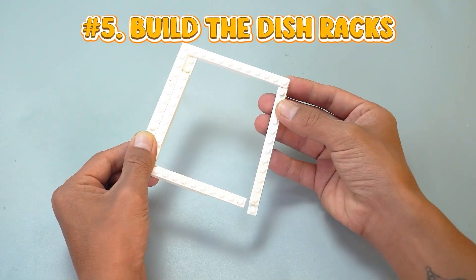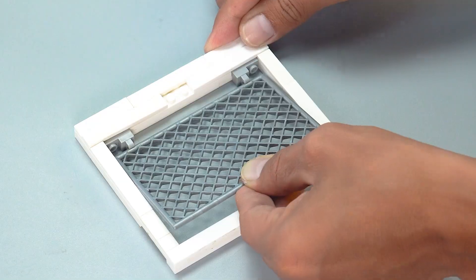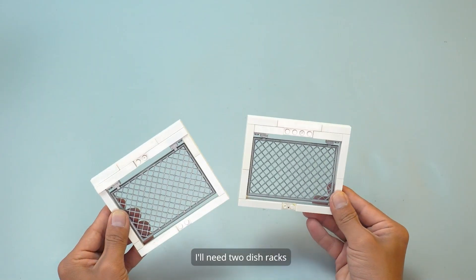Number 5, build the dish racks. Lego mesh. I'll need two dish racks.